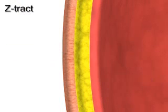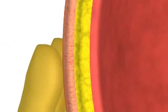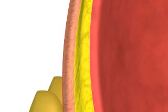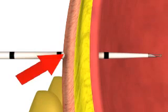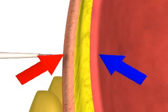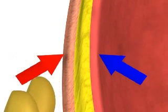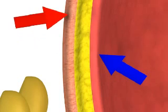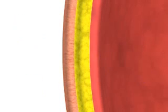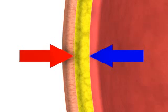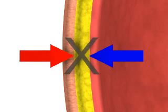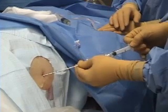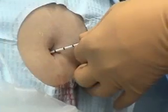Alternatively, a z-track technique may be used. In this method, the cutaneous tissues are pulled 2 centimeters caudad prior to needle insertion and advancement through the peritoneum. When the catheter is withdrawn at the end of the procedure, the cutaneous entry site will retract to its original position. Both techniques ensure that the cutaneous and peritoneal insertion sites do not directly overlie each other, theoretically minimizing the risk of an ascitic fluid leak following the procedure. Intermittently pull back on the plunger as you continue to advance the needle through the subcutaneous tissue.